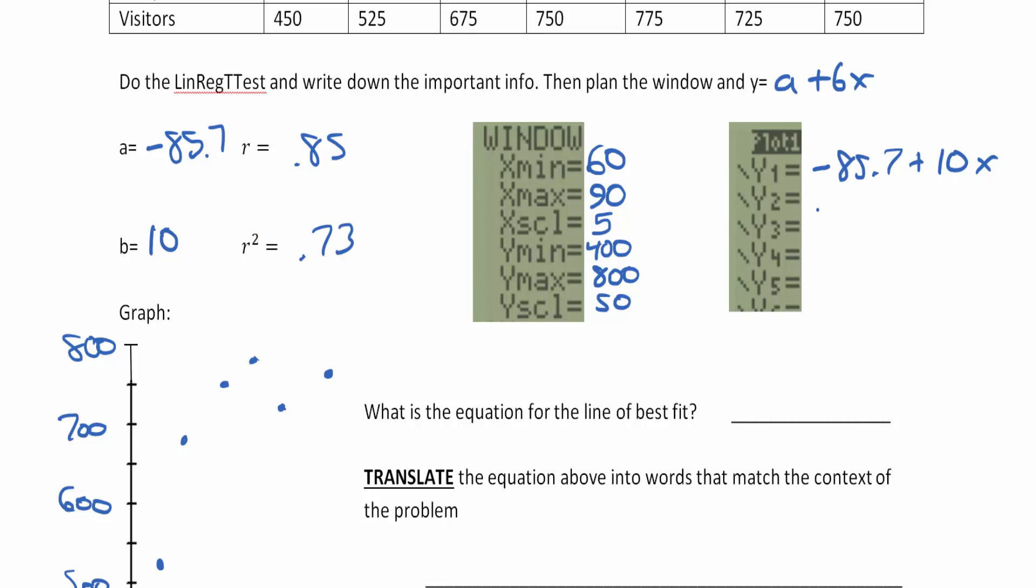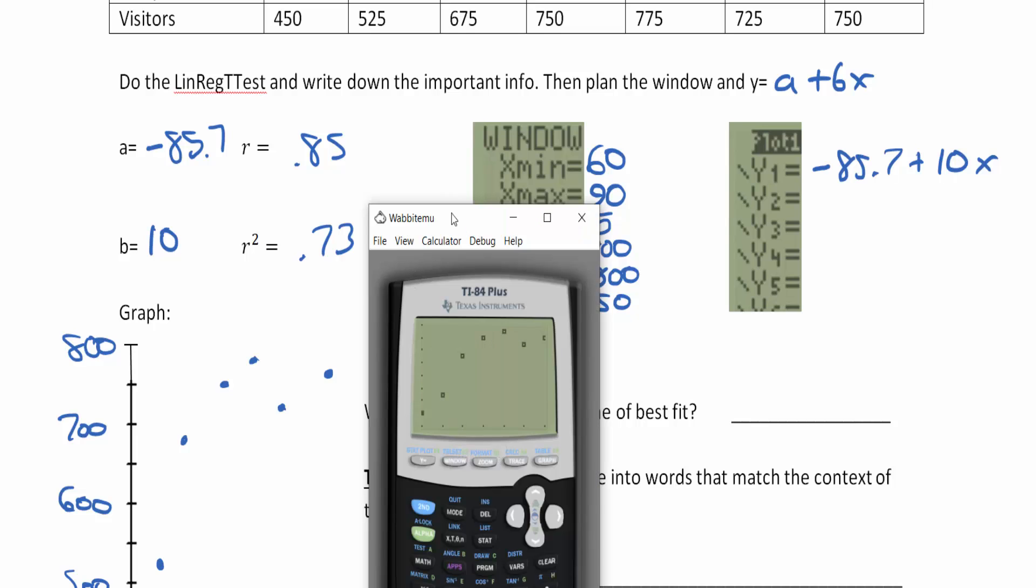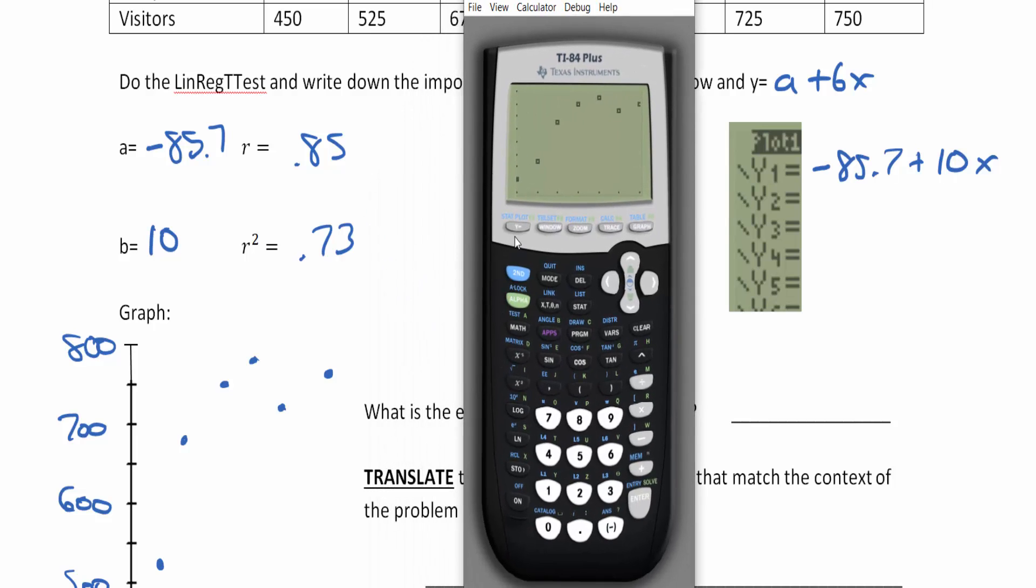Could have also written this as 10x minus 85.7. The order is not important as long as you have the y-intercept by itself.